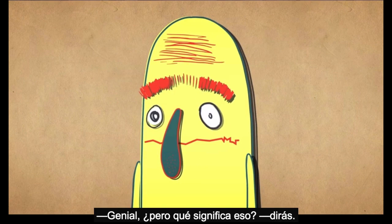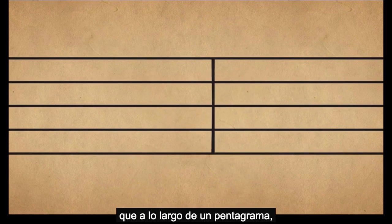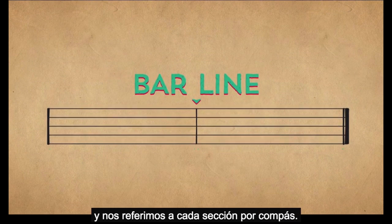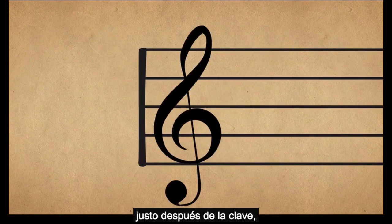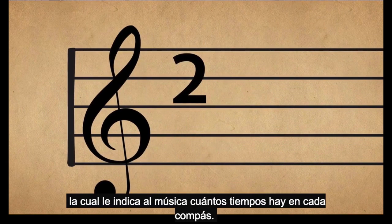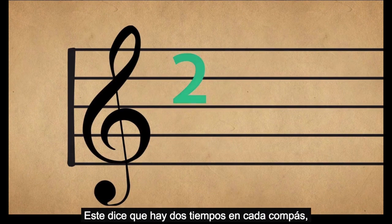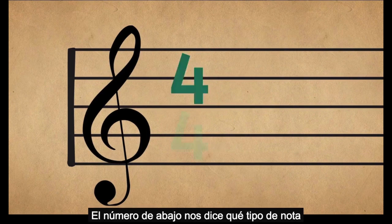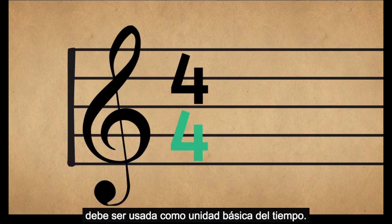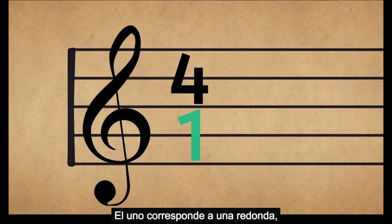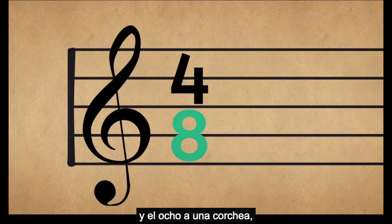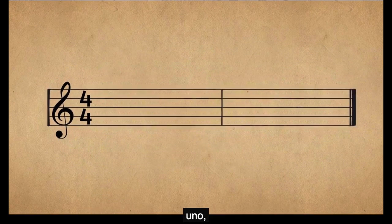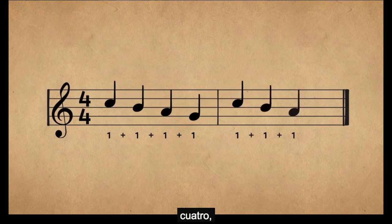What does that mean? You might have noticed that across the length of a staff, there are little lines dividing it into small sections. These are bar lines, and we refer to each section as a bar. At the beginning of a piece of music, just after the clef, is something called the time signature, which tells the performer how many beats are in each bar. This says there are two beats in each bar, this says three, this one four, and so on. The bottom number tells us what kind of note is to be used as the basic unit for the beat: one corresponds to a whole note, two to a half note, four to a quarter note, eight to an eighth note, and so on. So this time signature here tells us that there are four quarter notes in each bar: one, two, three, four, one, two, three, four, and so on.